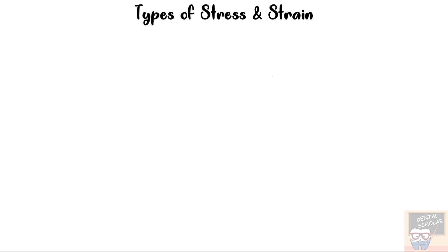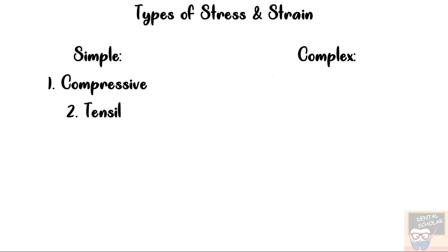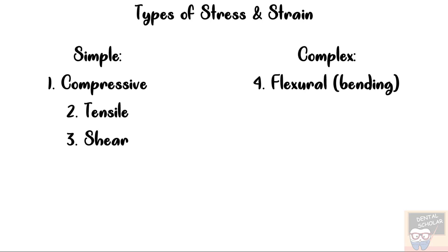Let's now see the different types of stresses and strains. They can be divided into two categories: simple and complex. The simple stresses are compressive, tensile, and shear, with corresponding strains of compression, tension, and shear strain. The complex stresses are flexural or bending stress and torsion, with corresponding strains of bending strain or flexure and torsion or twisting.